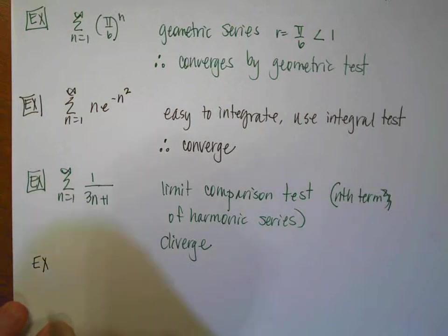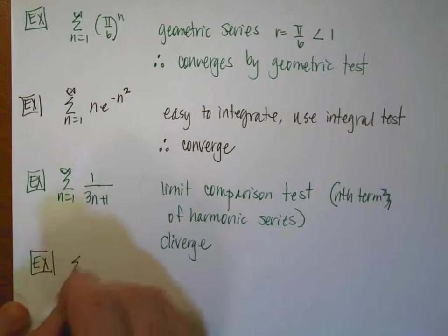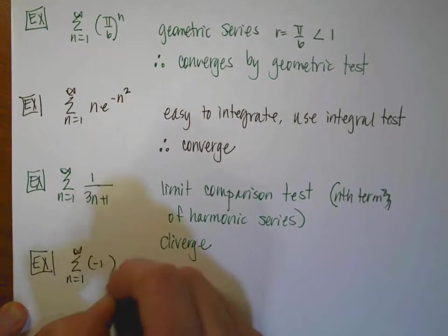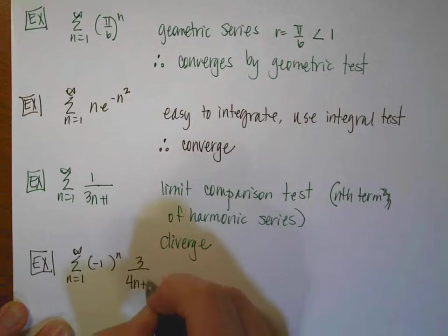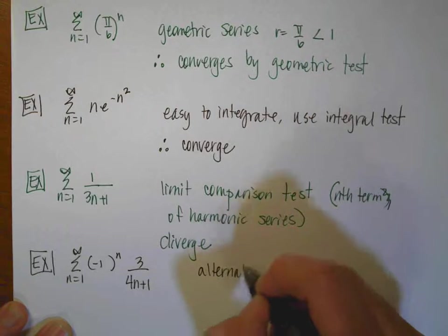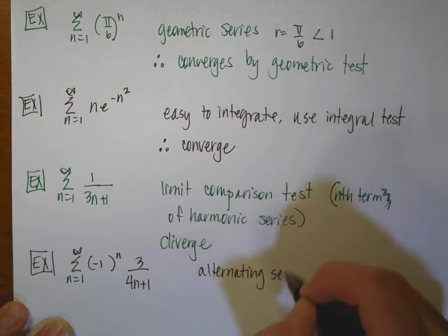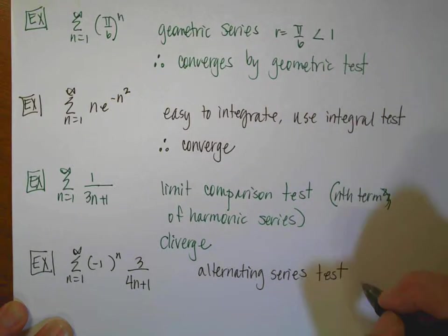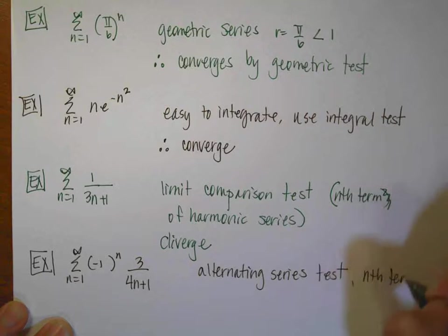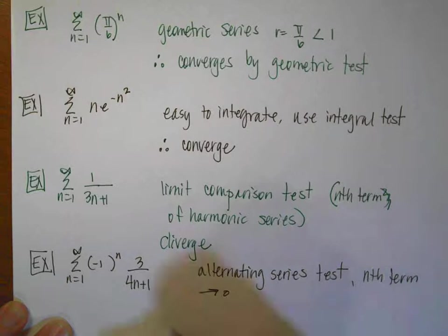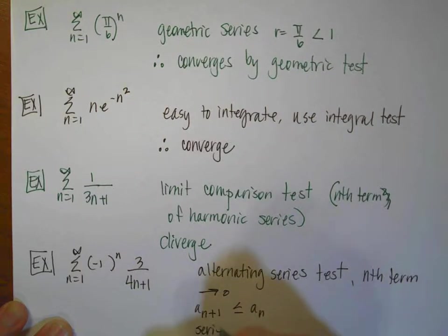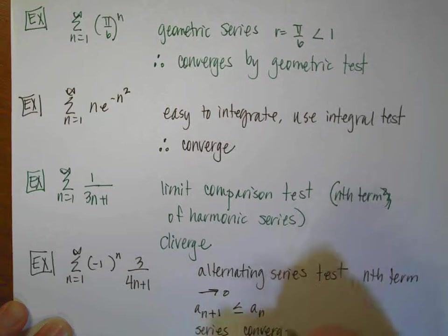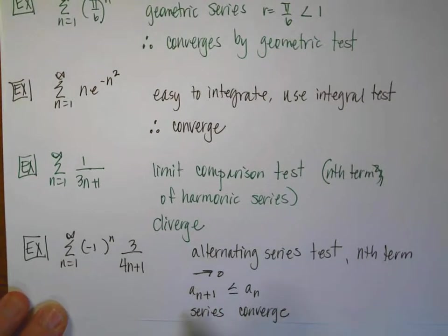Example number 5: I'm going to have the sum from n equals 1 to infinity of negative 1 to the n times 3 over 4n plus 1. This would cue me to try the alternating series test. Indeed, I want to use the alternating series test, and then my nth term is going to approach 0. So I know that a sub n plus 1 is going to be less than or equal to a sub n, and therefore my series is going to converge.